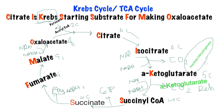One more thing about isocitrate dehydrogenase: this is the shutdown button of the Krebs cycle. When we're making enough ATP but we're not using it, isocitrate dehydrogenase shuts down the Krebs cycle. Everything backs up — isocitrate backs up to citrate, back to acetyl-CoA — and the Krebs cycle stops making ATP.